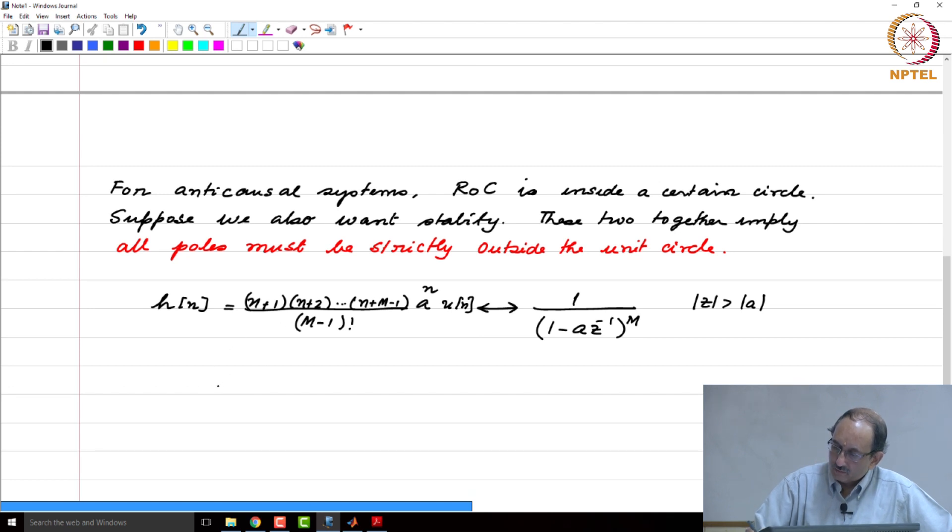Let us consider the case where m is 2 and 3 just to get a feel. If m were 2, this will be n plus 1 times a to the n u of n. And this system is stable if mod a is less than 1.